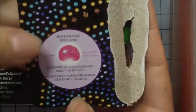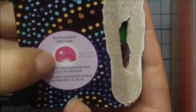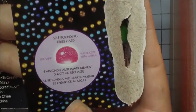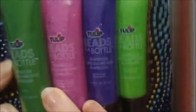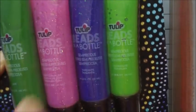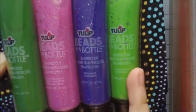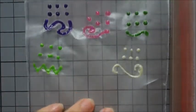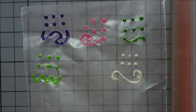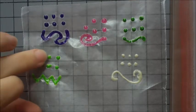If you look right here, it says self-rounding, dries hard. There's a picture of it, and these are the colors I got: green, glittery pink, glittery purple, and glittery green. These are pretty rounded.